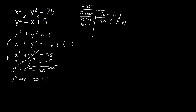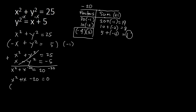Trying 10 and negative 2 gives a product of negative 20 and a sum of positive 8 — still not right. Next, we try 5 and negative 4, since 5 is bigger than 4. Positive 5 plus negative 4 equals 1, which is the sum we need. So we factor x squared plus x minus 20 as (x minus 4)(x plus 5) equal to 0.